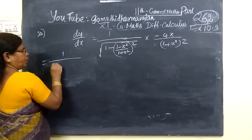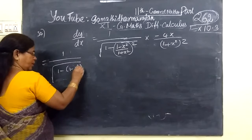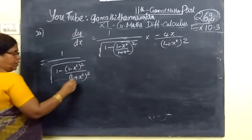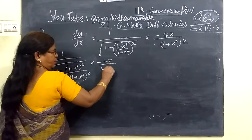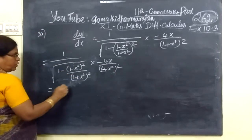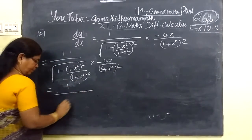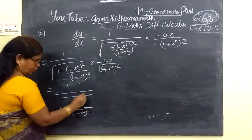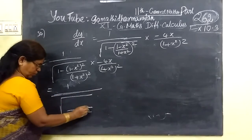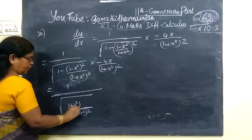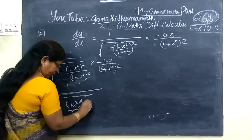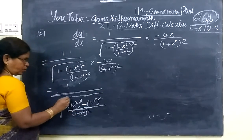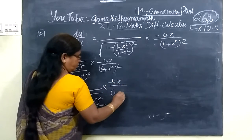So 1 plus x squared, then 1 minus x squared the whole square by 1 plus x squared the whole square — the root is numerator and denominator. Take the LCM, then cross multiply: 1 plus x squared the whole square minus 1 minus x squared the whole square, under the root.